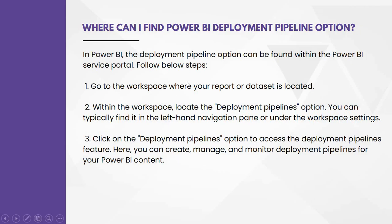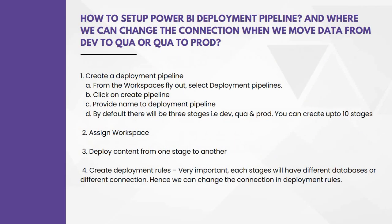The next question: where can I find the Power BI deployment pipeline option in Power BI? The deployment pipeline option can be found within the Power BI service portal. You can go to the Power BI workspace where your report or dataset is located. Within this workspace, locate the deployment pipeline option, which is typically found in the left-hand navigation pane or under workspace settings. Click on it to access the feature where you can create, manage, and monitor deployment pipelines for Power BI content.